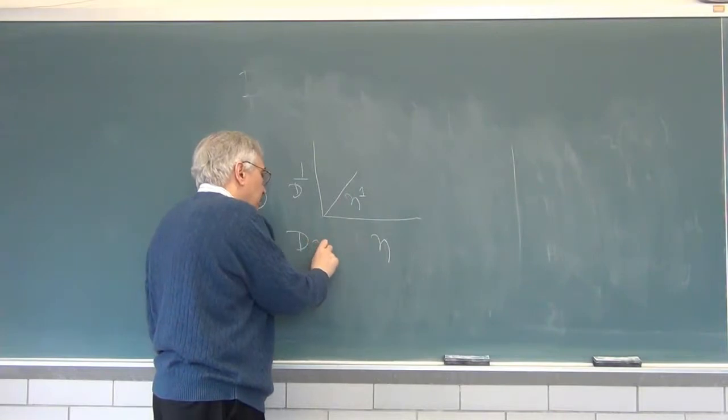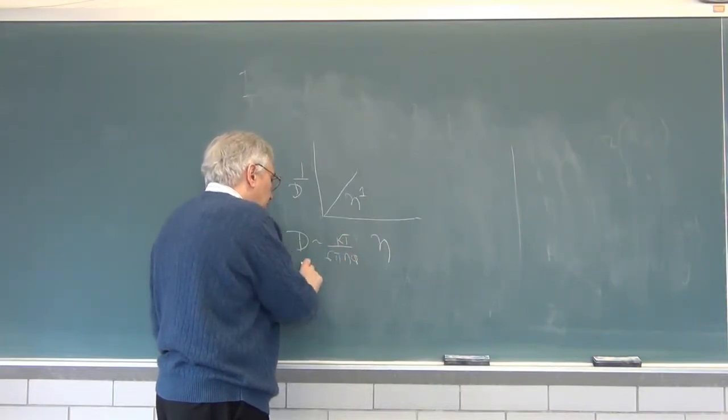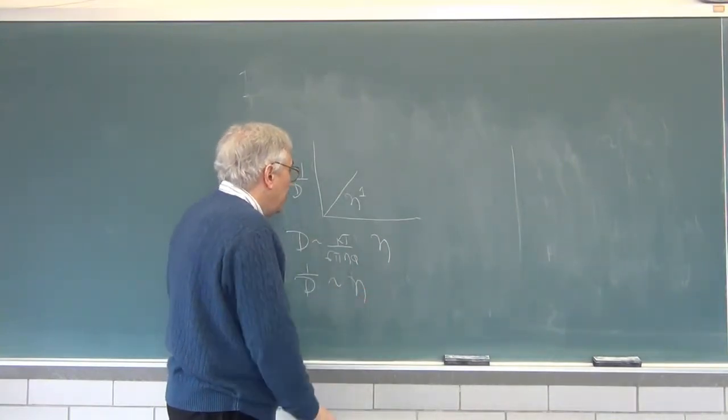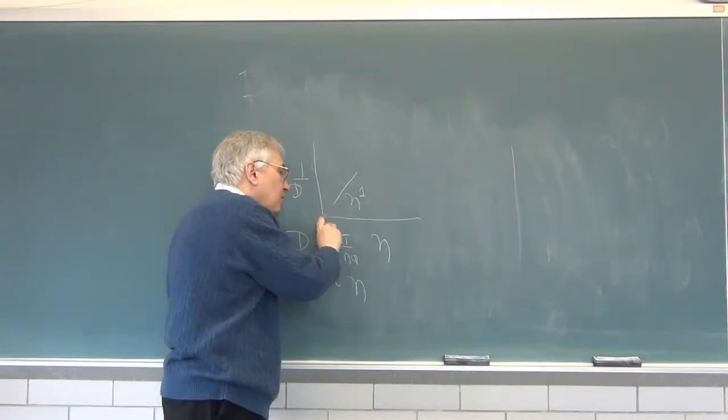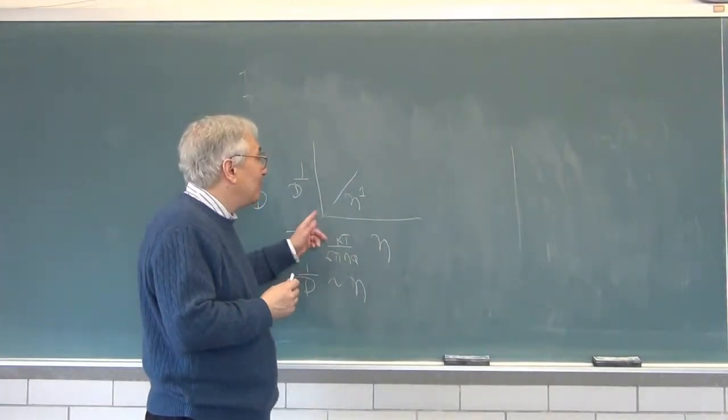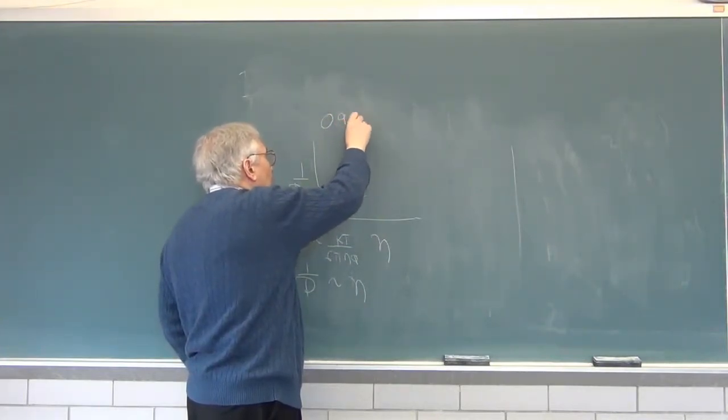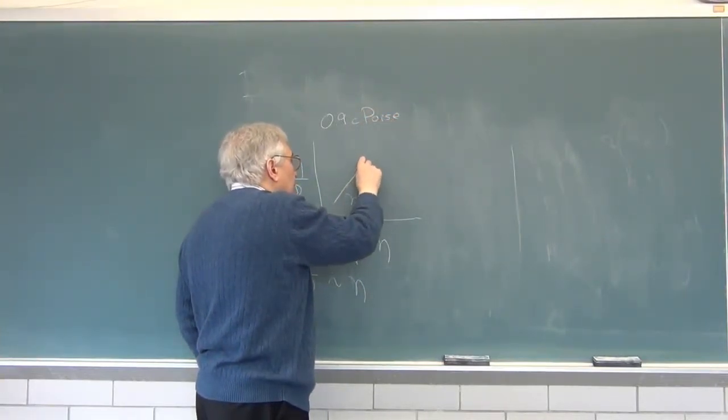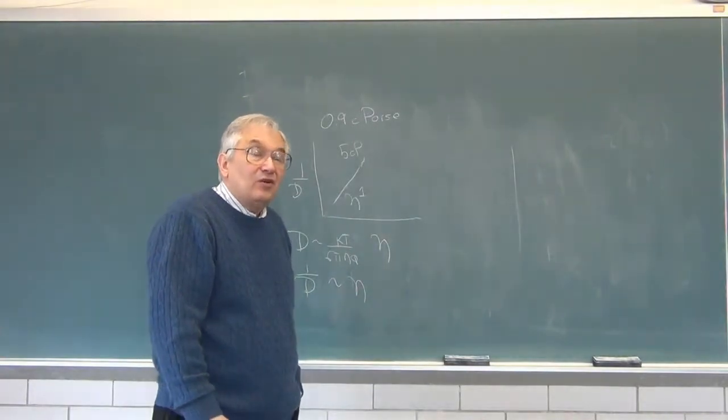And what we find is that in not very viscous solutions, one over the diffusion coefficient is proportional to eta to the first power. If d is like kt over six pi eta a, then one over d is proportional to the viscosity, says Stokes-Einstein. And if our liquids aren't too viscous, that's exactly what we find. And we chug ahead and we get out to about five centipoise. And at some point near five centipoise, there is a sudden change.